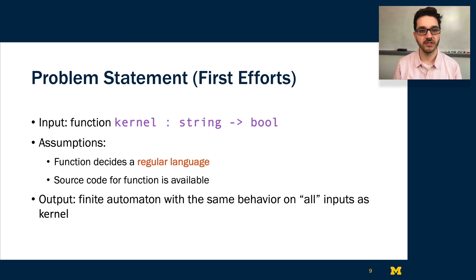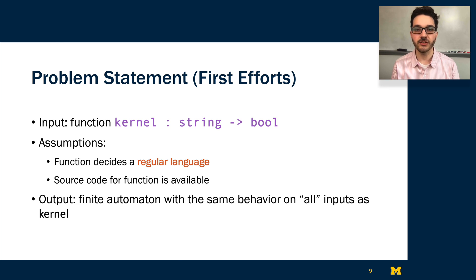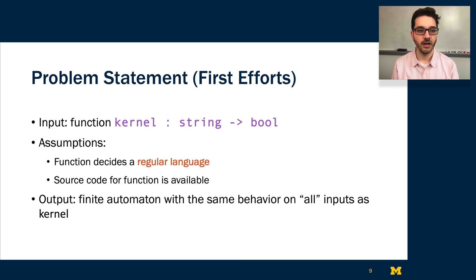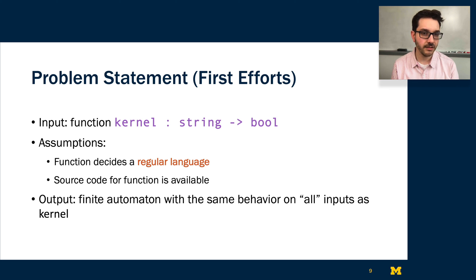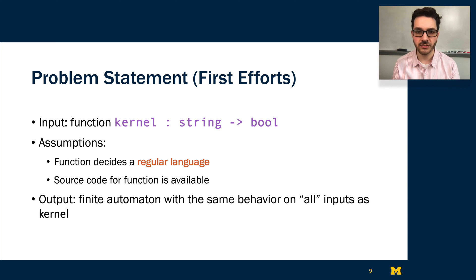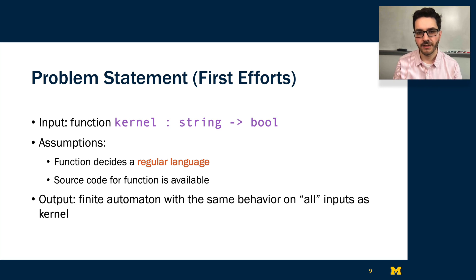In particular, in AutomataSynth we consider one class of legacy software that I call boolean string kernels. These are functions that take as input a string and return some boolean flag. We make some further assumptions since this is an initial effort: we assume that our function will decide a regular language and that the source code is available, since we're assuming a world where a developer is trying to port existing code. And we are tasked with outputting a finite automaton that has the same behavior on all inputs as this kernel function.